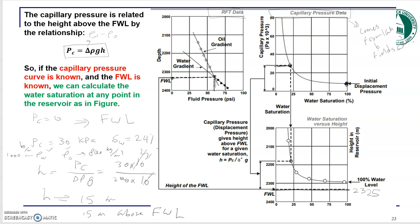At 15 meters above the free water level, you have a water saturation equal to 24%. Note that the numbers don't match exactly because the capillary pressure data shown here is from the lab and not yet converted to field scale — you should use the field capillary pressure data to do this properly.